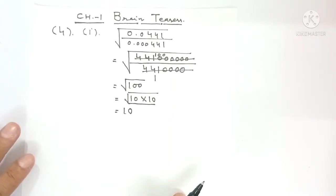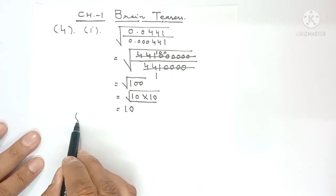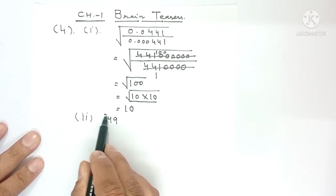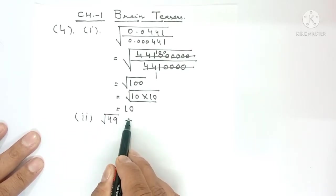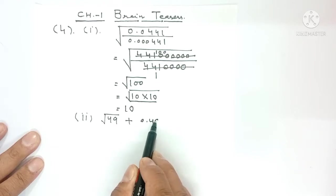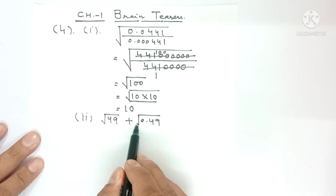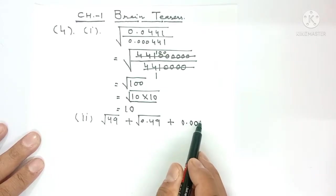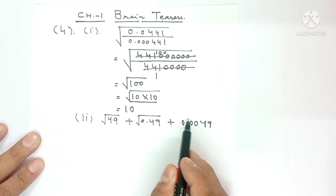Now let's do part 2: square root of 49 plus square root of 0.49 plus square root of 0.0049.